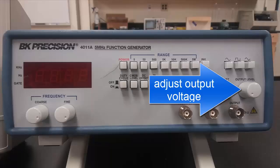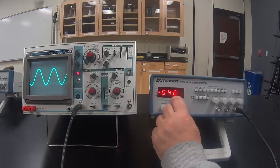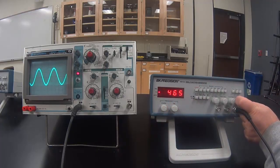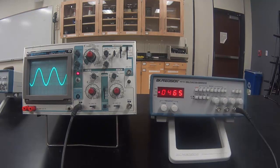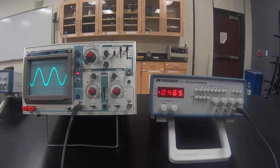You can adjust the output voltage with this knob on the function generator. Once you have set frequency and voltage for the function generator, don't change it because we are learning how to measure a signal and it wouldn't make sense to change it in the middle of measurement.